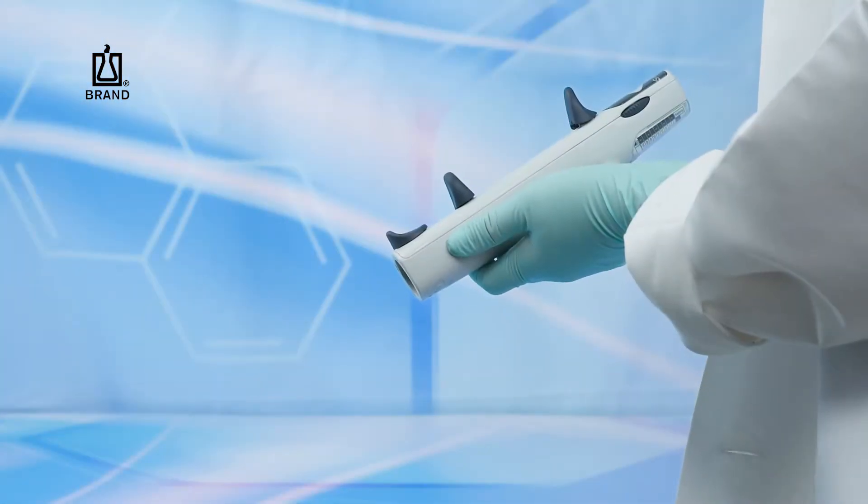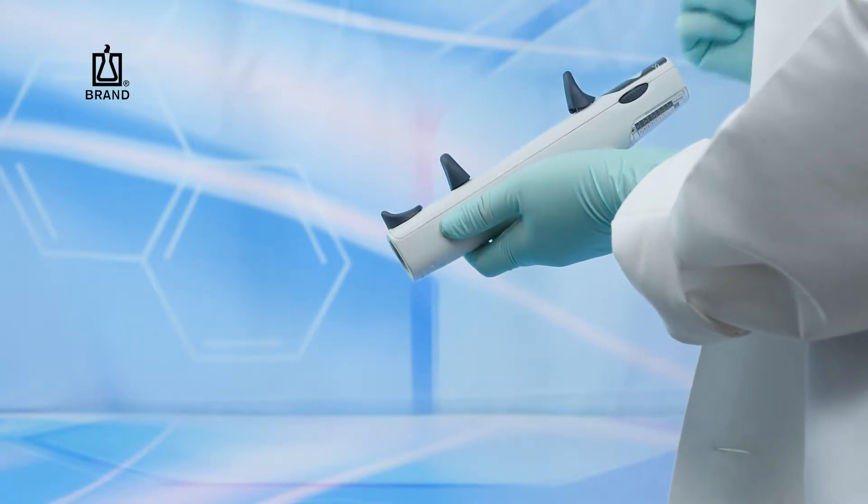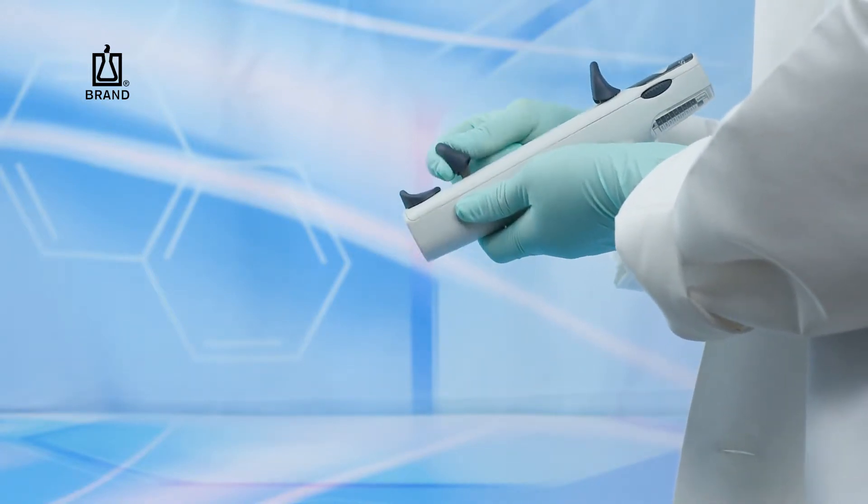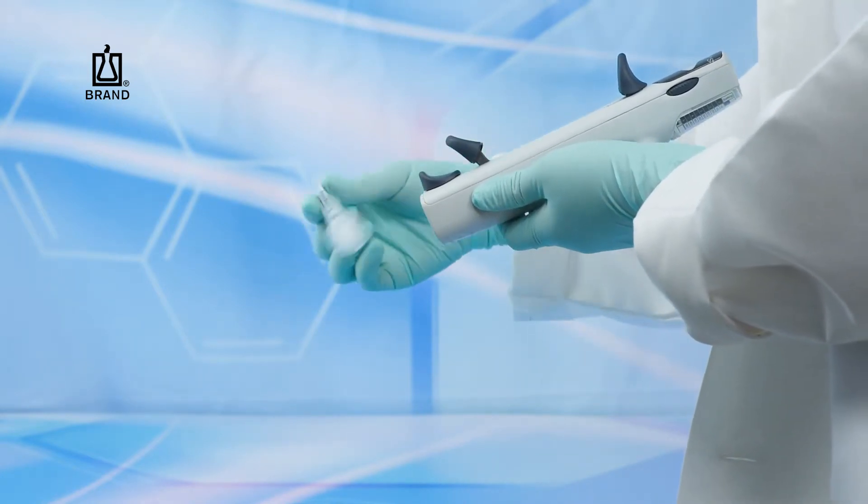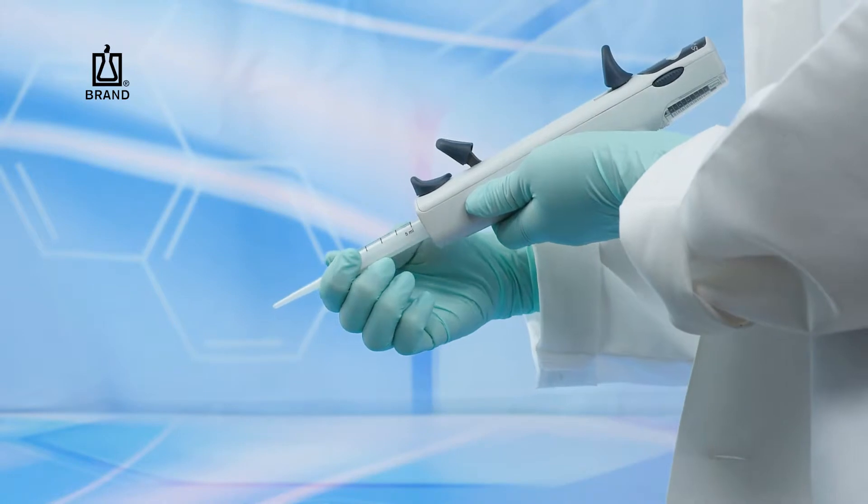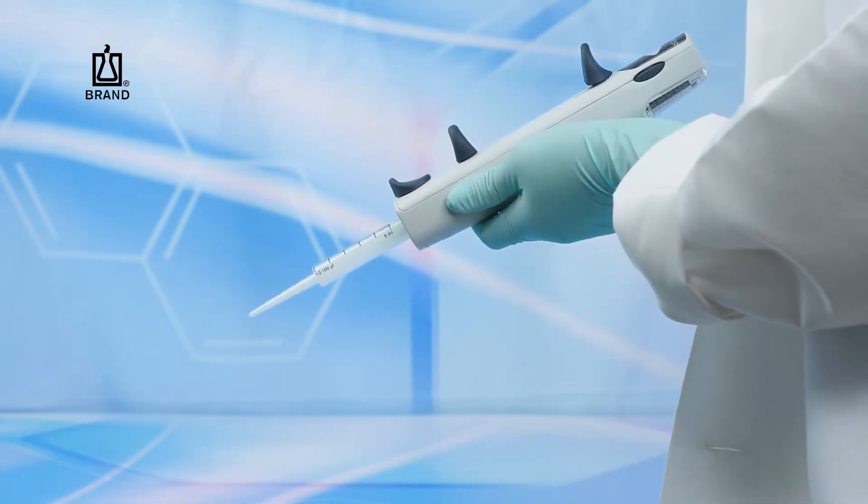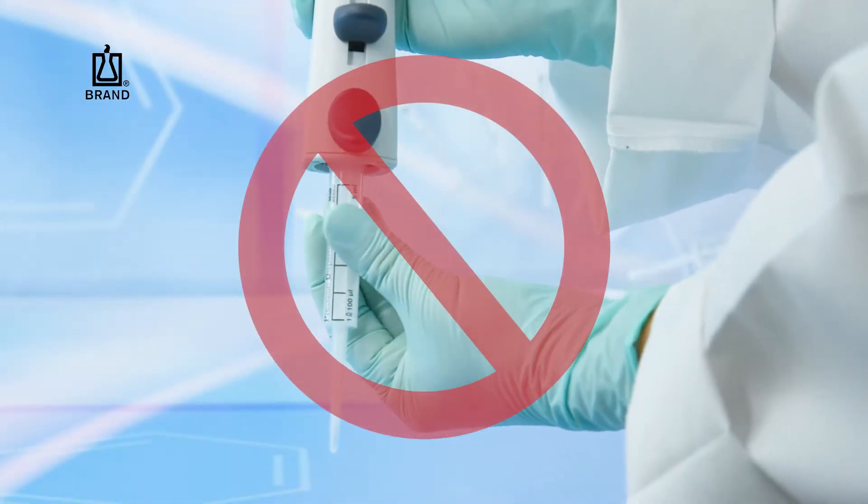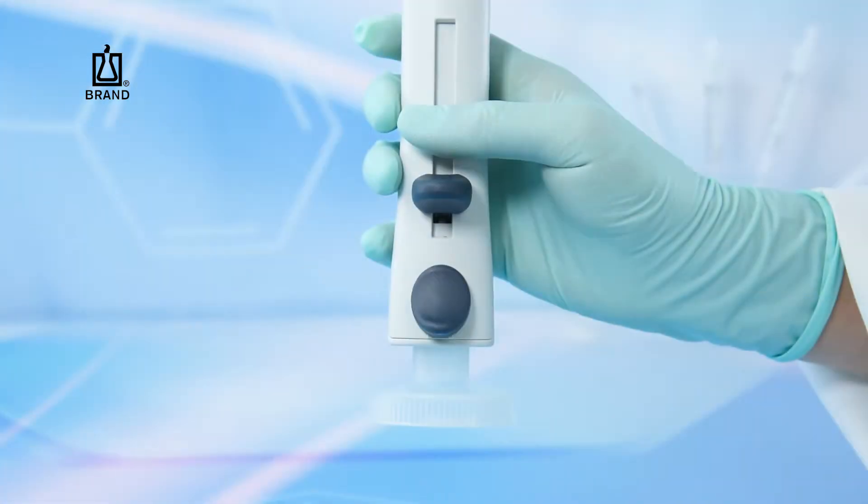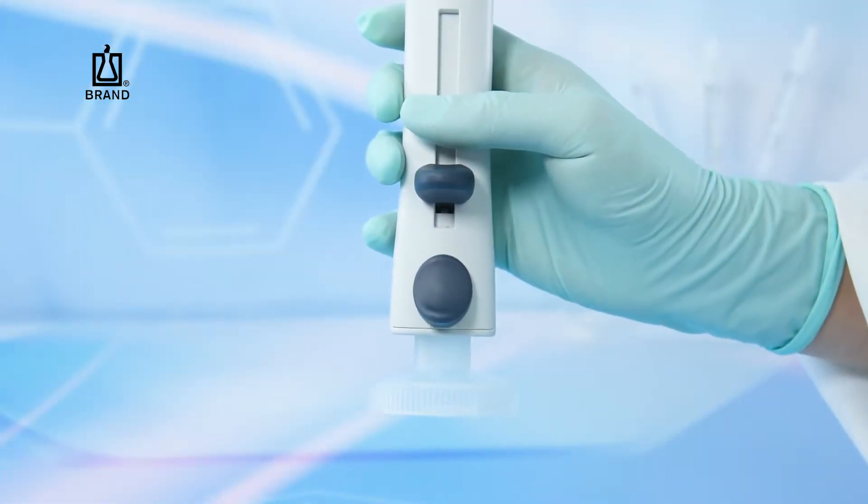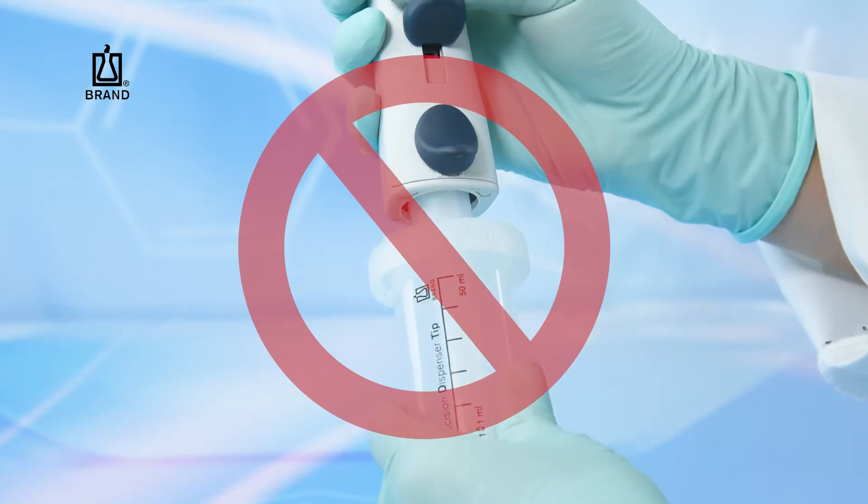To insert the selected PD tip into the HandyStep S, ensure that the locking filling lever is pushed to the lowermost unlocked position. Push the PD tip straight into the lower section of the HandyStep S, then swing the locking filling lever into place to lock the piston into the unit. Do not twist the tip after inserting. Never try to insert a 25 mil or 50 mil PD tip into the HandyStep S with the adapter already inserted into the instrument.